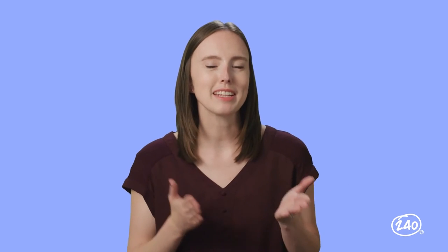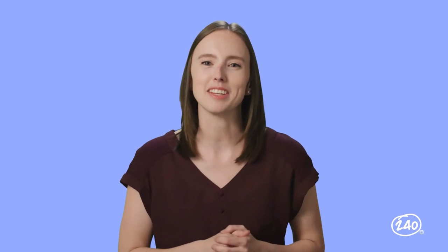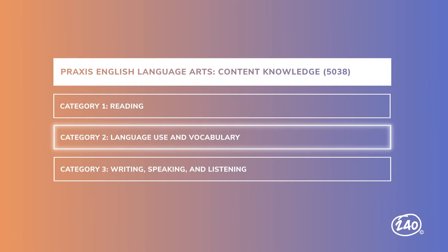Okay, that's it for writing, speaking, and listening — well, not completely. On to our last category. Category 2, language use and vocabulary, covers things like grammar, syntax, and mechanics, and methods for supporting language acquisition for diverse learners. It also includes the use of reference materials to support language usage.